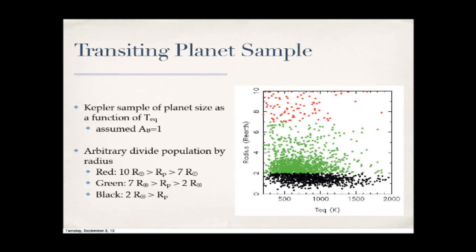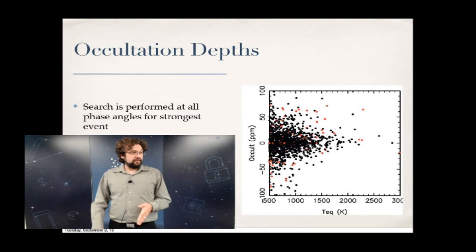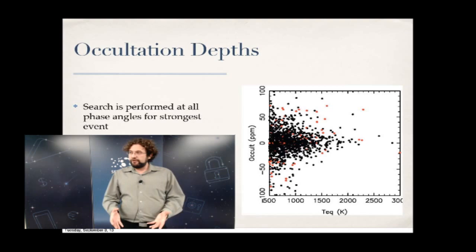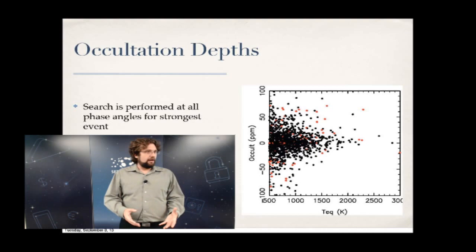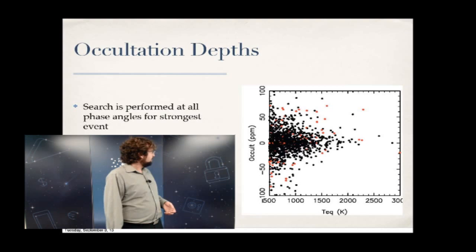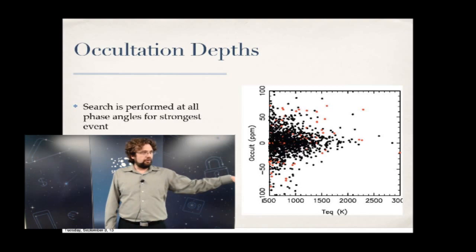I can search through all these light curves for occultations — looking for periodic dips at the same period as the transit. The figure shows equilibrium temperature from around 500 to 3,000 Kelvin versus occultation depth in parts per million. It's scattered mostly around zero because many events are noisy. We don't expect thousands of occultations since the signal is small and you need close-in planets — so only tens of these events are expected.